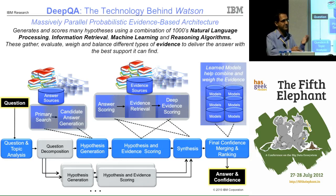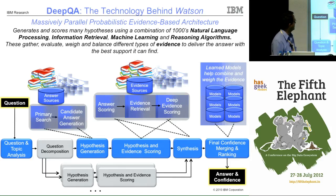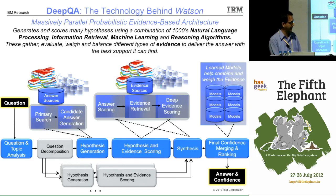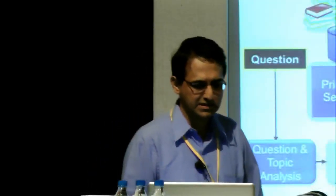Once candidate passages are retrieved and candidate answers extracted, evidence for each can be scored in parallel. Only at the end does everything need to be combined. The system involved about a million lines of code and thousands of natural language processing algorithms. What was found is that there's no single bullet — the work on building this system is described in a series of papers published in the IBM Journal of Research and Development.